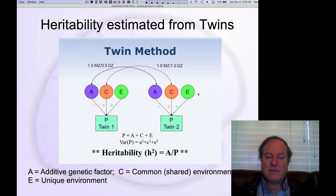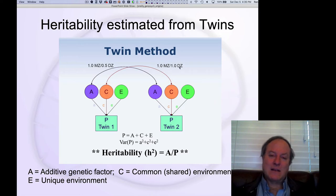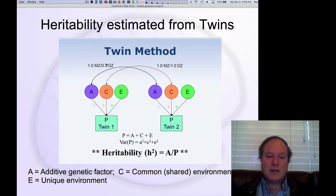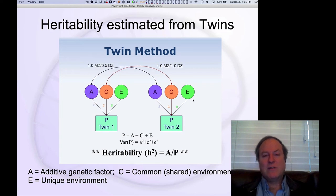Then you have two different environmental factors. The first is the common or shared environment — the C factor — which is estimated to be 100% shared for both monozygotic and dizygotic twins. Whatever is common between them is shared between them. So you have this differential factor weighting where the genetic factor is 100% for one set of twins and 50% for the other, but the rest is the same. Then there's the unique environment factor, which has no shared elements. So we're partitioning the environment into shared and unique components.